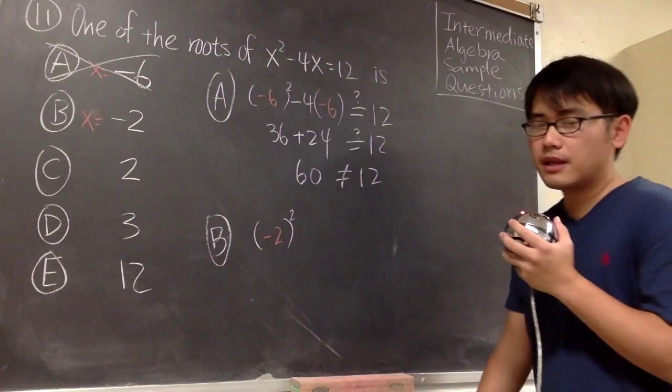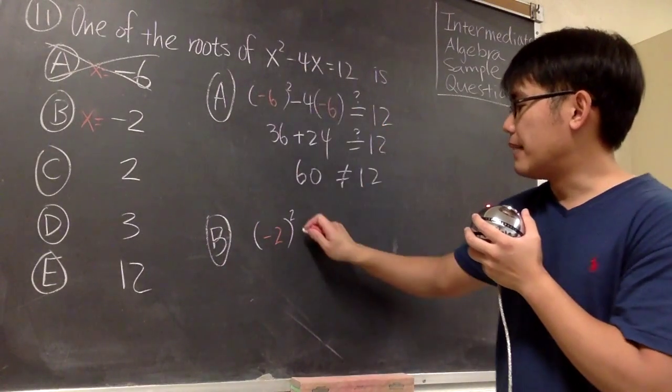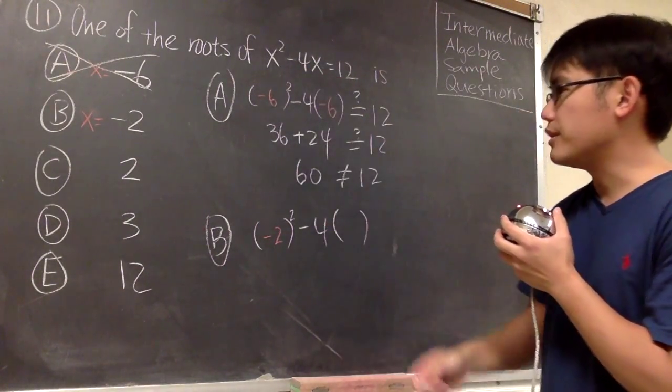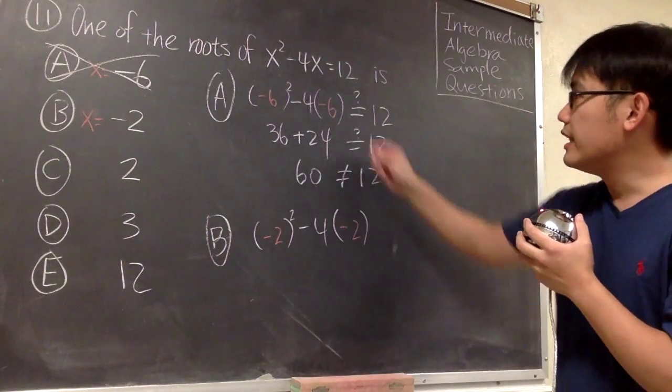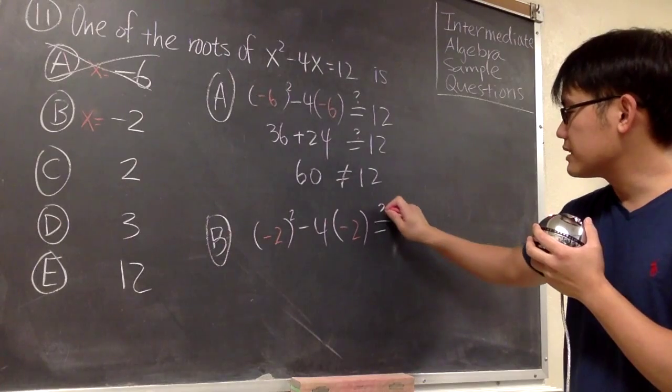Okay. And we continue, we have the minus 4 times the x. So open the parentheses, x is negative 2. And then do we end up with positive 12.